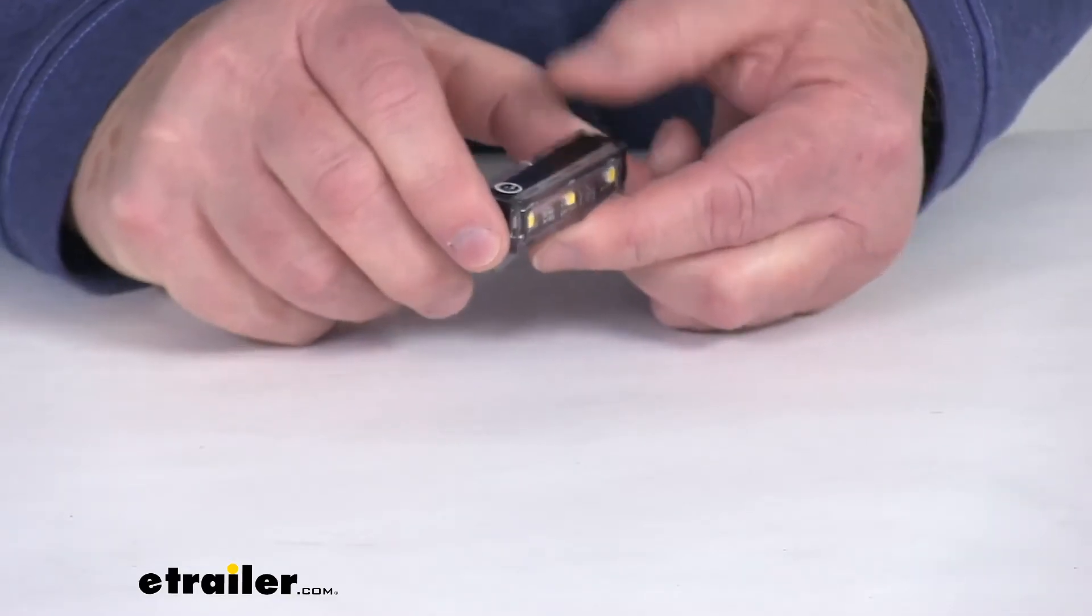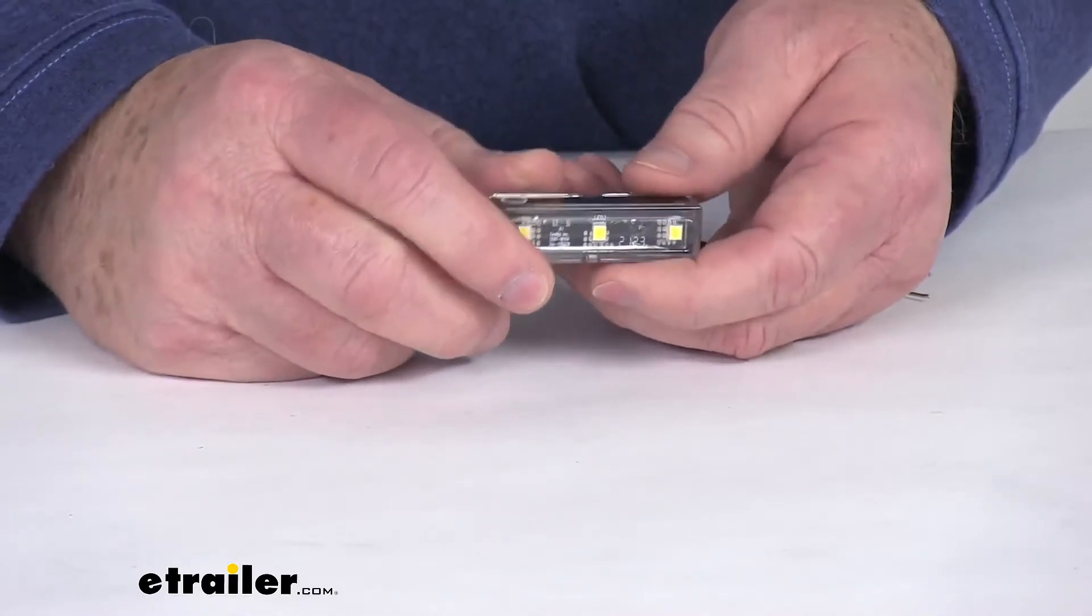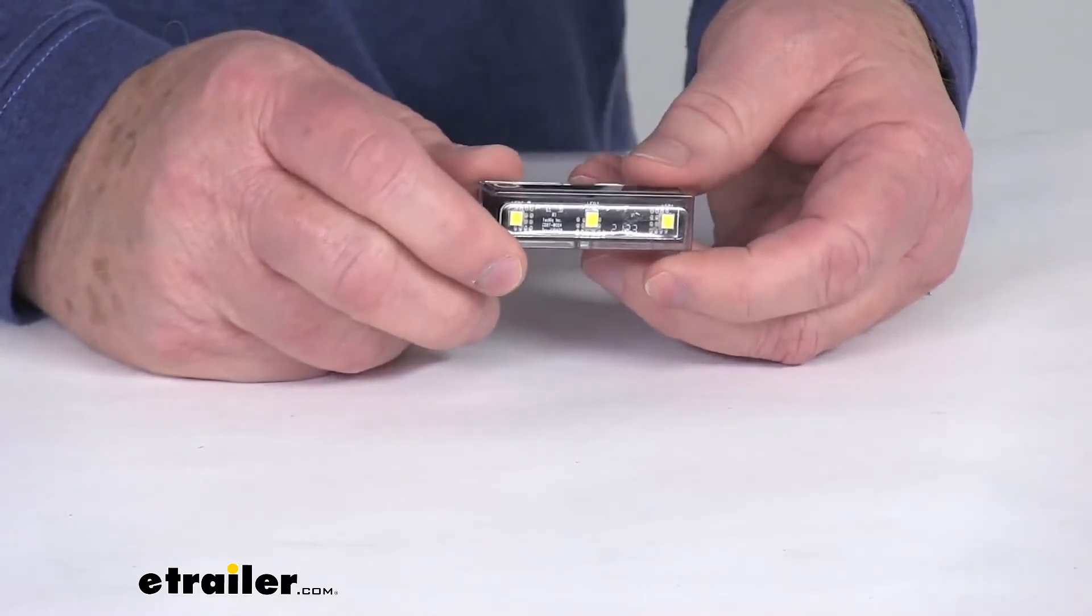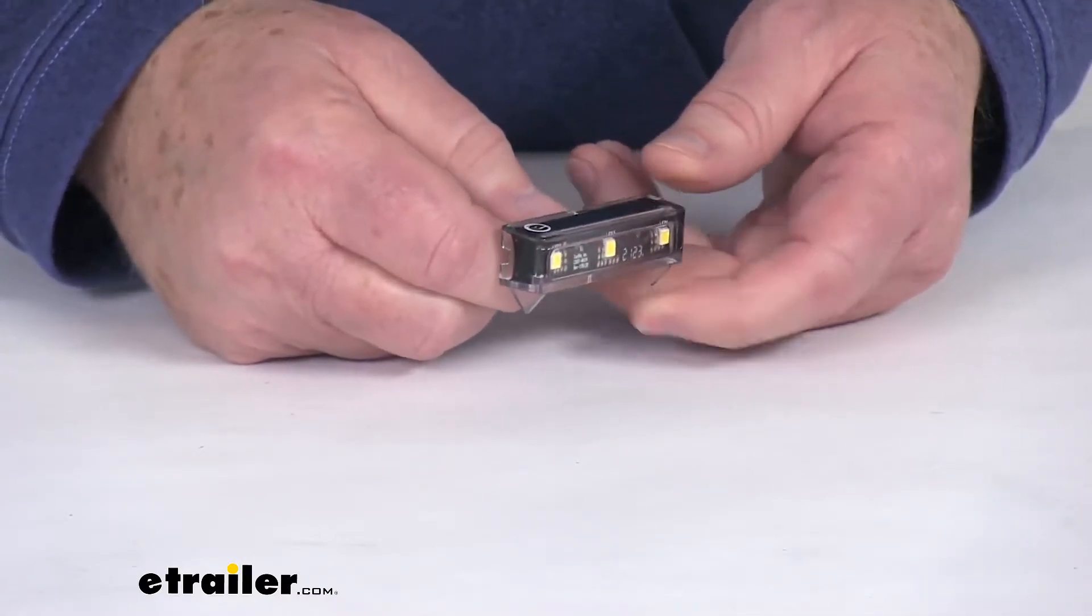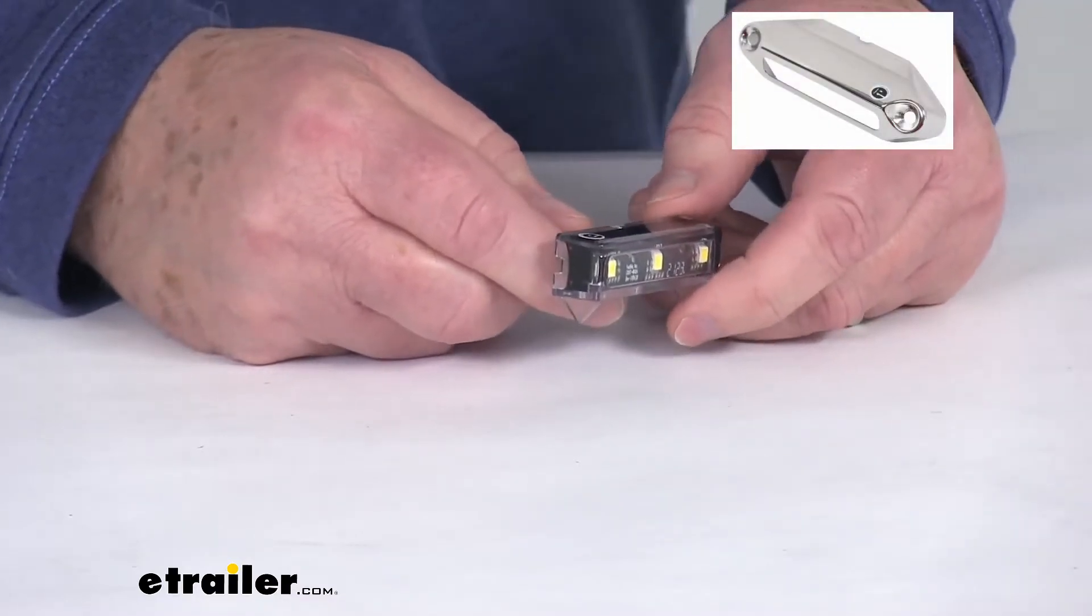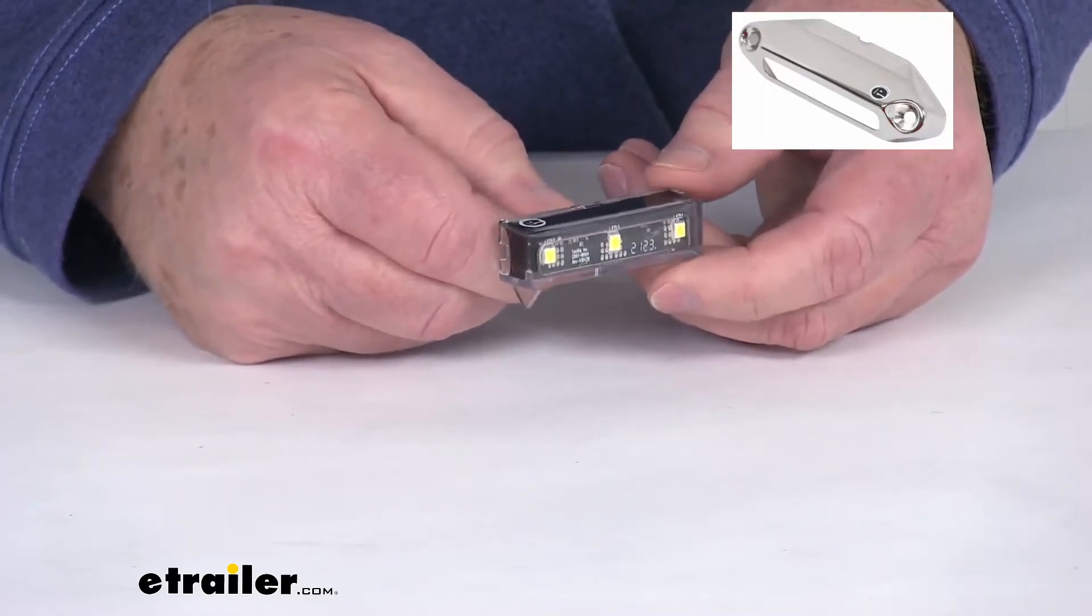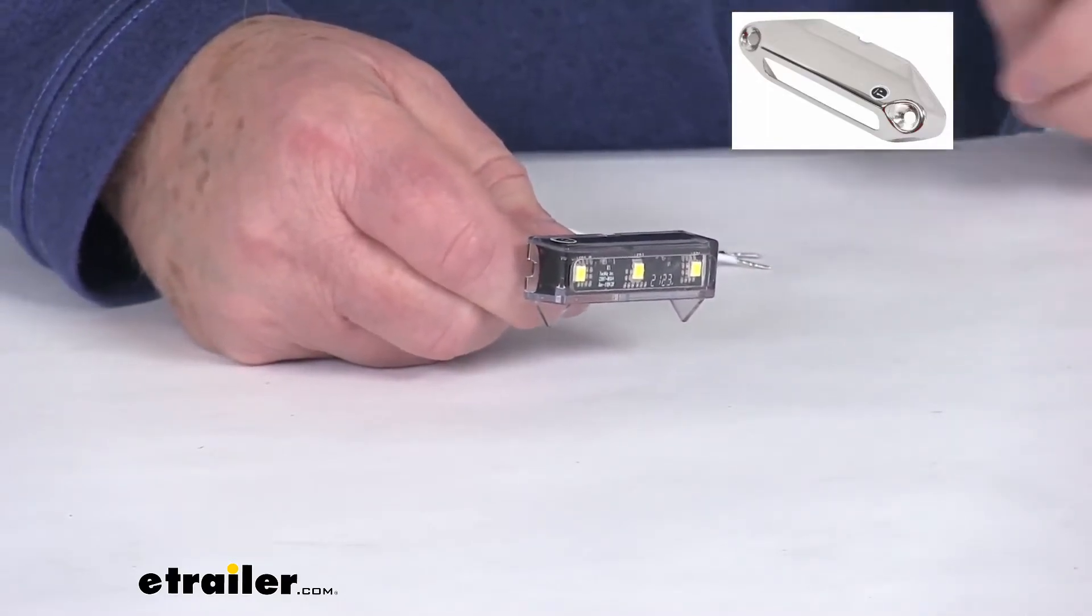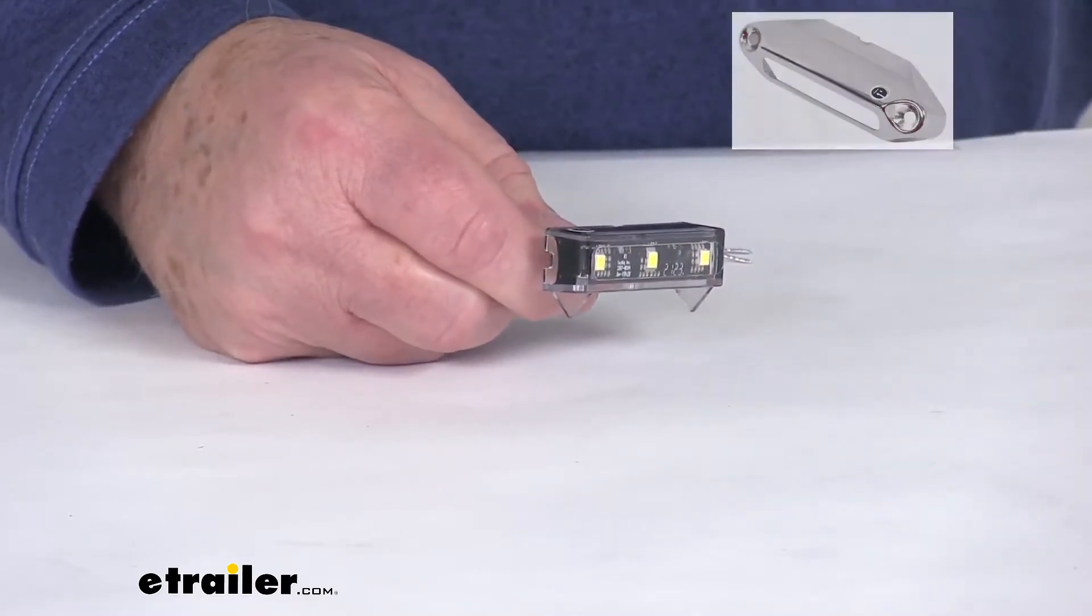And as we mentioned, it is a surface mount installation. Now it does mount using a protective 45 degree mounting cover, which we do sell separately on our website. And they do come in different finishes like stainless steel or black. I did want to pop up an insert. There's a stainless steel cover that's designed just for this 45 degree mounting light. But again, those we do sell separately on our website, and they are listed on this product page as a related product.